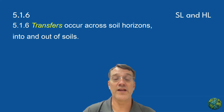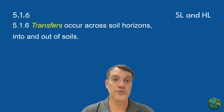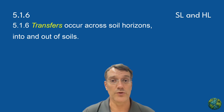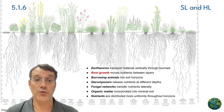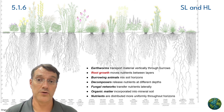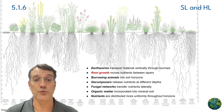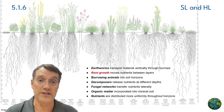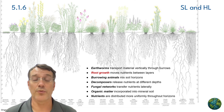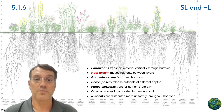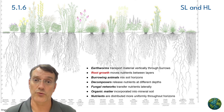Transfers in soil occur between and across horizons, and into and out of soils. These movements are really important for distributing nutrients and maintaining soil structure. Earthworms transport material vertically through their burrows, while root growth moves nutrients between layers. Burrowing animals mix soil horizons, and decomposers release nutrients at different depths. Fungal networks transfer nutrients laterally, and organic matter gets incorporated into mineral soil. These biological processes all help distribute nutrients more uniformly throughout the soil horizons.